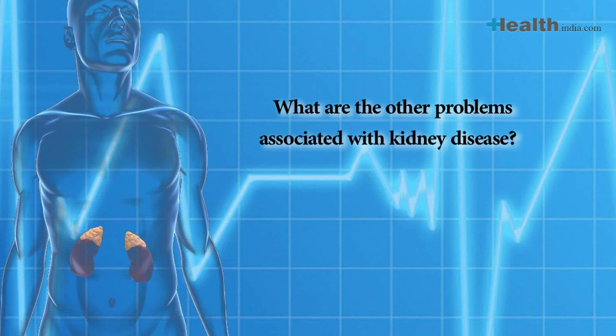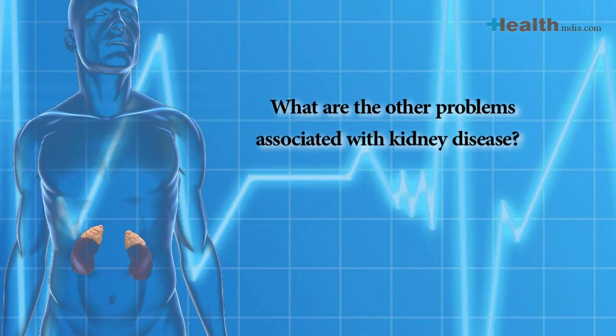Doctor, what are the other problems associated with kidney disease? Kidney disease can in general be classified as acute kidney disease or chronic kidney disease. By definition, if you have any structural or functional damage to your kidney function which has been present for more than or equal to three months, then it is diagnosed as chronic kidney disease.